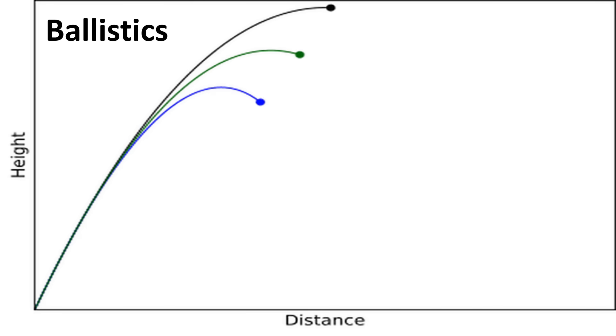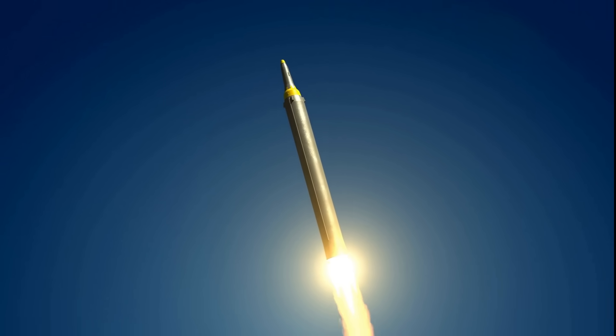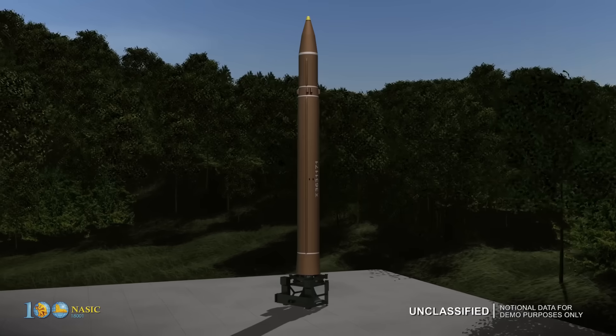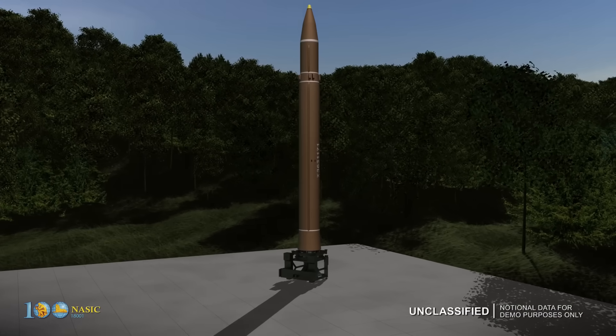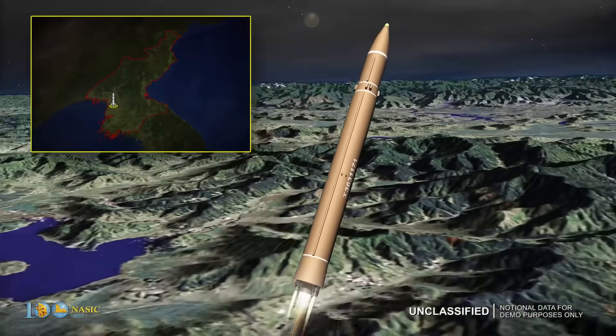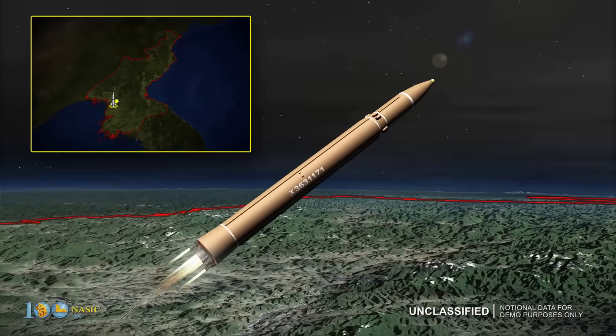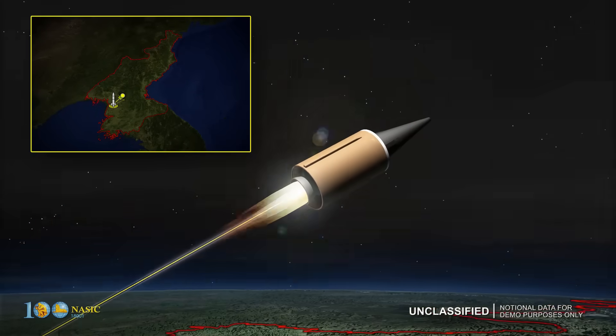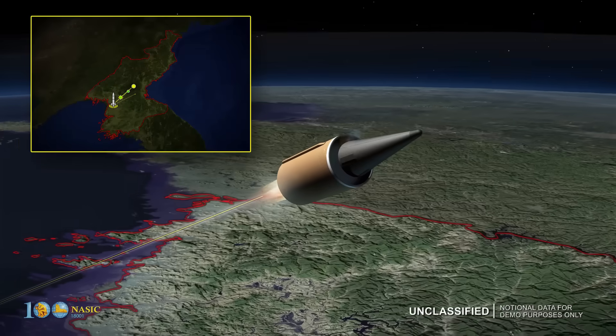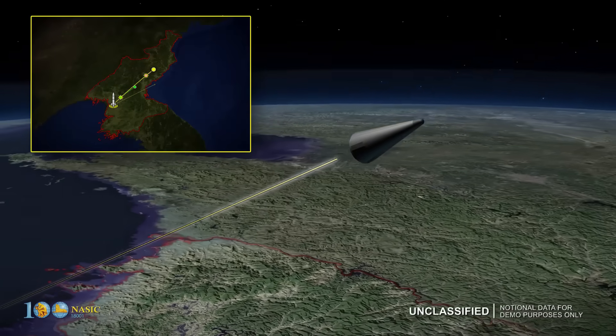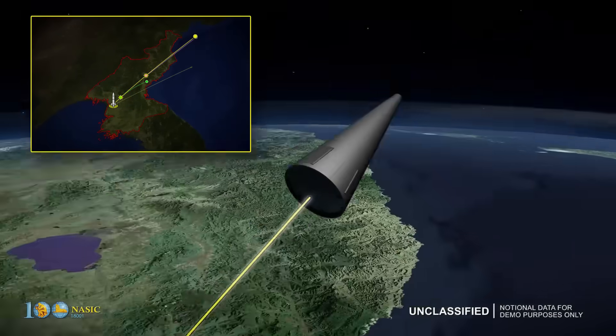Now, many people might think, how can we compare the path of a ball with the path of a missile that has a powerful rocket engine? This is where misconceptions arise. A ballistic missile actually travels about 90% of the distance to its target without any rocket propulsion. This means the rocket engine only fires for the first 10% of the journey.